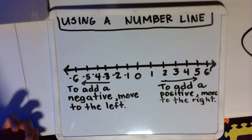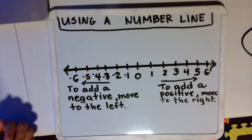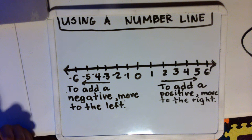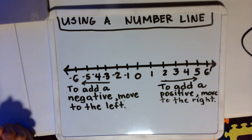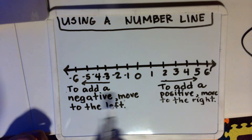In this video, I'm going to show you how to add integers using a number line. There are two things you have to remember. Number one, to add a negative integer, you move to the left of the number line.